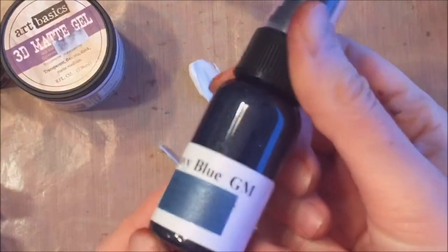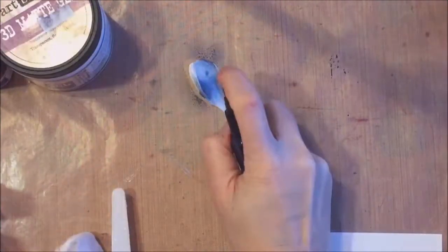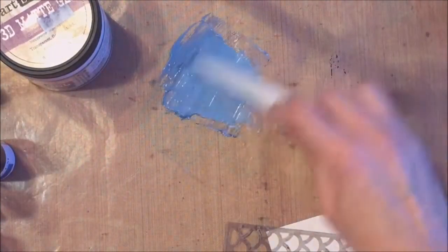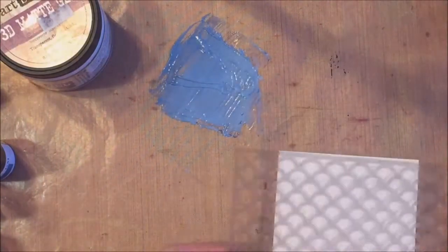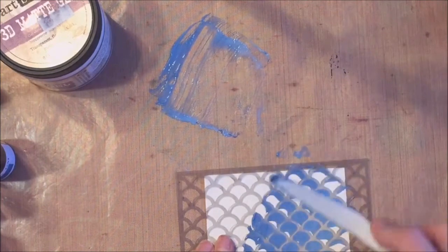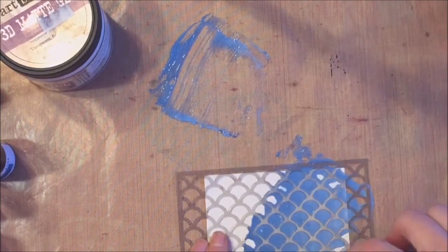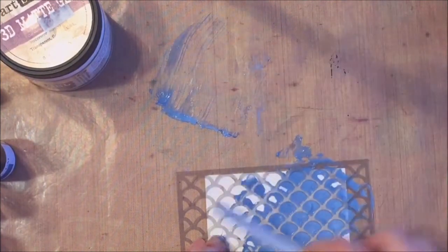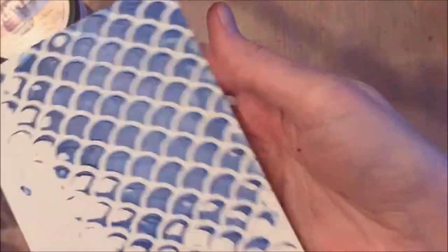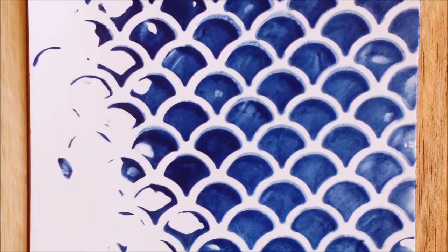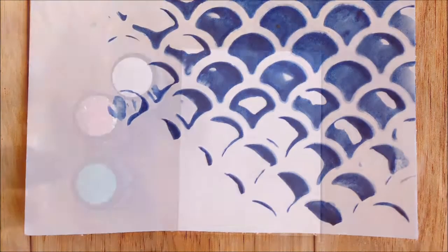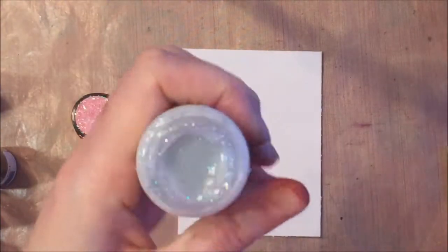Now for the 14th background we've got some texture paste. This is a translucent paste and I've sprayed it with Navy Blue Glimmer Mist and I'm just picking that up with my palette knife and spreading that through a stencil. The glimmer mist tints it so nicely and gives it a really neat effect. You could do this with white texture paste as well.